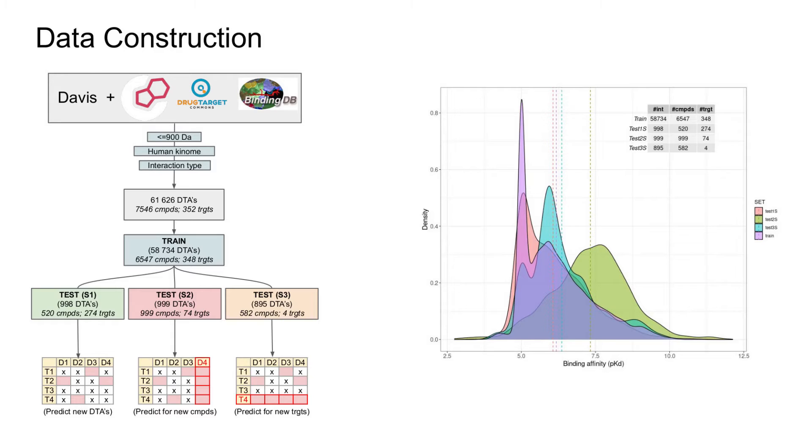One disadvantage that remains before and after we extend the data is huge imbalance in what we consider active and inactive interactions, or binding affinities pKD or pKI below seven units and those above or equal to seven units, as can be seen on the density plot.